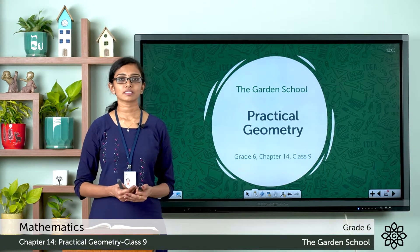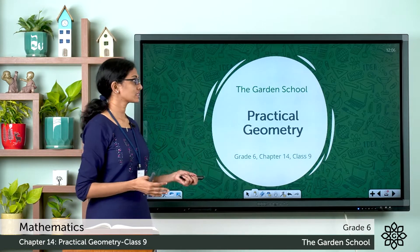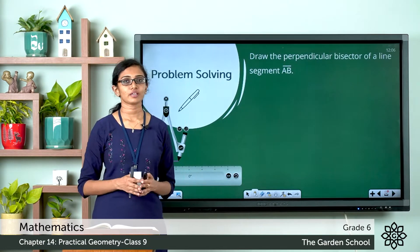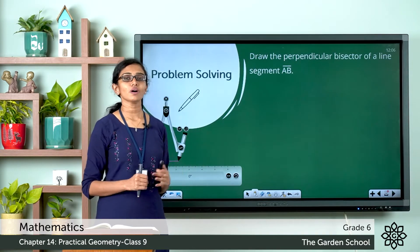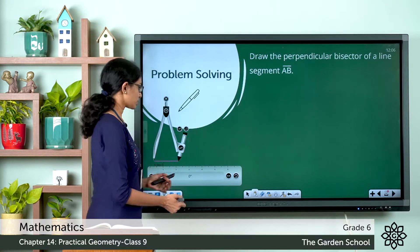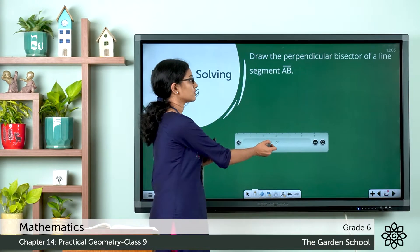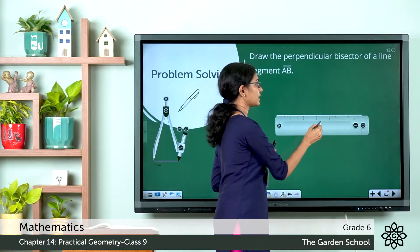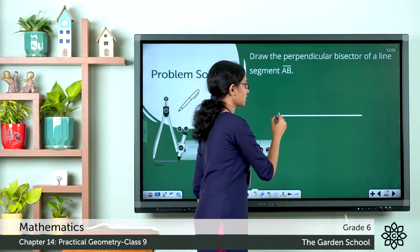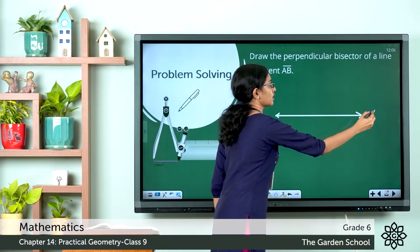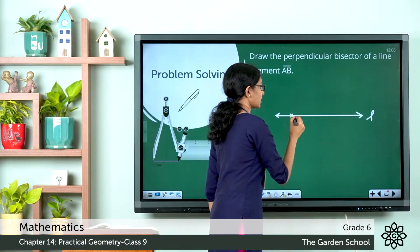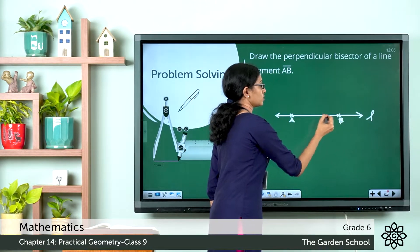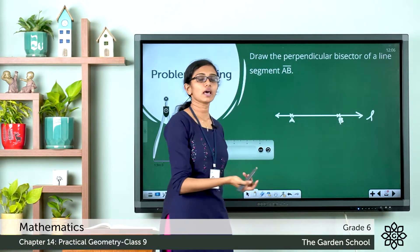Let us see the steps. Here we have a question: draw the perpendicular bisector of a line segment AB. The first step is to draw line segment AB. With your ruler and pencil first draw line segment AB. You can draw a line of any length. Mark two points A and B. So here we have line segment AB.